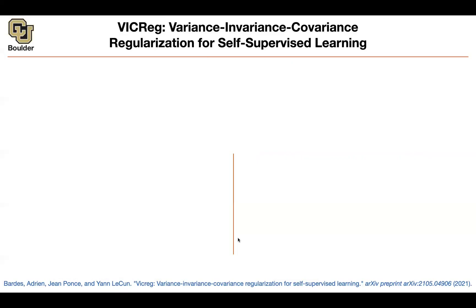Let's move on to variance, invariance, covariance. As we saw, the problem with self-supervised learning that we have to avoid one way or another is the fact that you have trivial solutions. A constant is a solution when you are self-supervising yourself — that's the easiest solution, and the neural network is going to pick that. We had contrastive learning, clustering-type methods, stop gradient and a prediction head. This is another method which is going to enforce it explicitly.